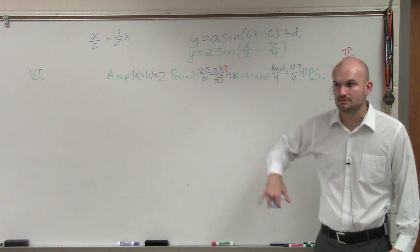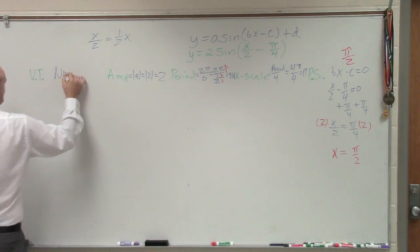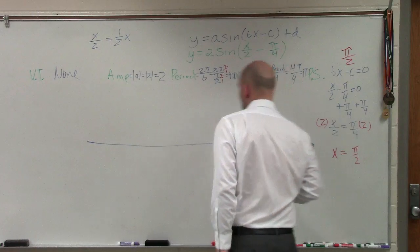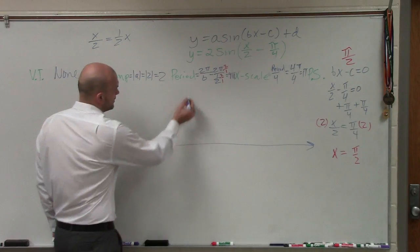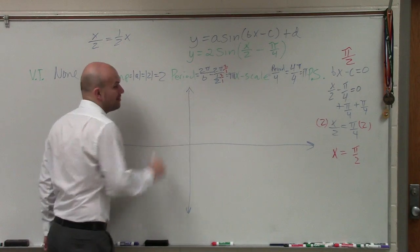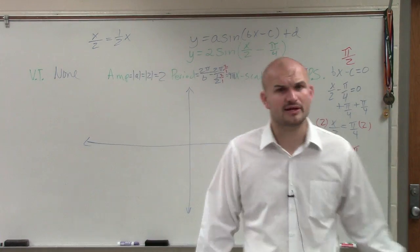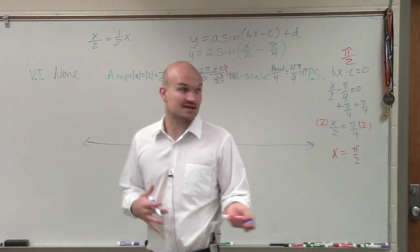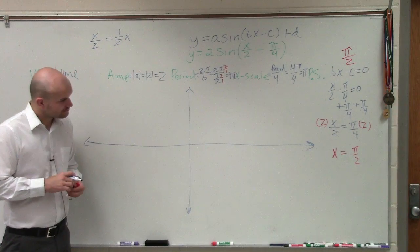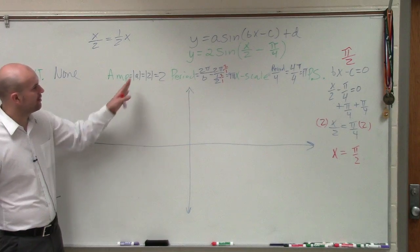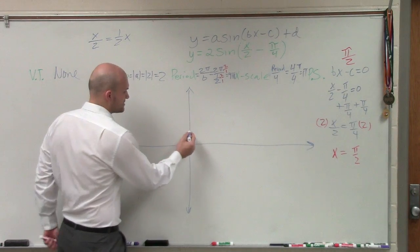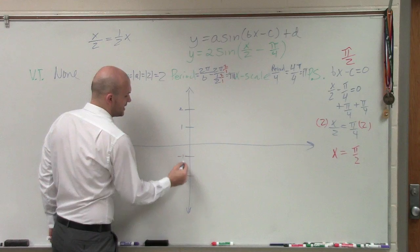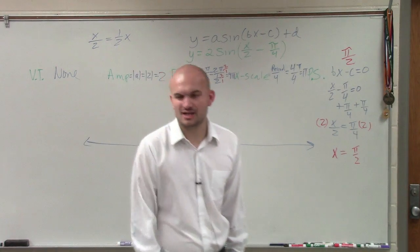Do not just assume it's π over 4. And then let's go over our vertical translation. Do we have anything shifting up and down? No. So we can just write none. So now let's go and graph this. When you guys are graphing, you're going to include two periods. You can include two positive periods, or a positive and a negative period, or two negative periods. For this example, I'll do a positive period and a negative period.